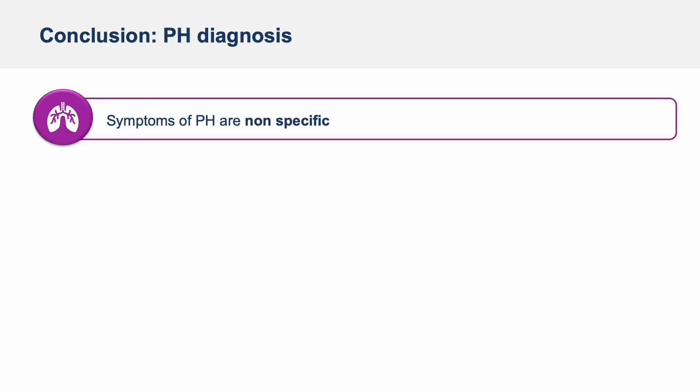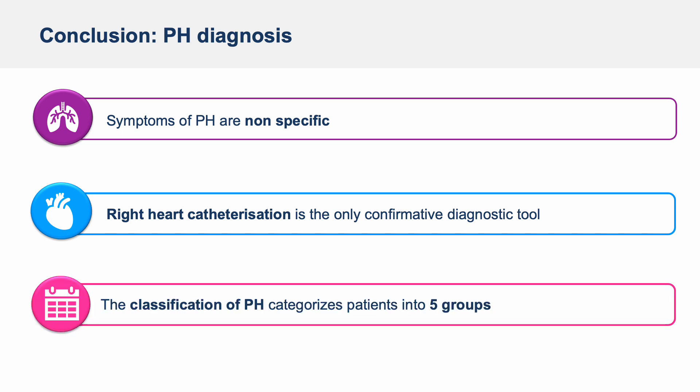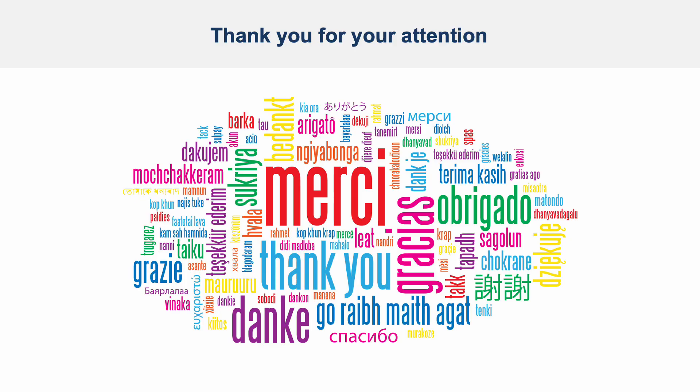To conclude this presentation: symptoms of PH are non-specific to the disease — we can have shortness of breath in other lung or cardiac diseases. Right heart catheterization is the only confirmative diagnostic tool. At the end of the diagnostic workup, we must classify patients into one of the 5 groups of PH, as the treatment approach depends on the classification. Thank you for your attention.